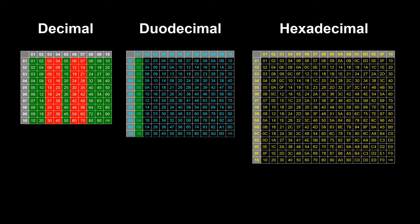In duodecimal it is easy to remember the 1 times table because the last digit counts up in 1s and the first digit counts up 1 every time the last digit changes from B to 0. The 2 times table has a repeating pattern of 2, 4, 6, 8, A, 0. The 3 times table has a repeating pattern of 3, 6, 9, 0. The 4 times table has a repeating pattern of 4, 8, 0. There is no easy way to remember the 5 times table. The 6 times table has a repeating pattern of 6, 0.